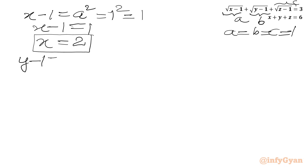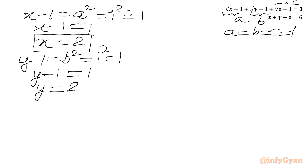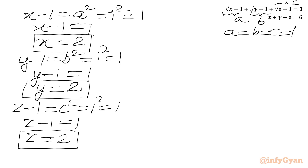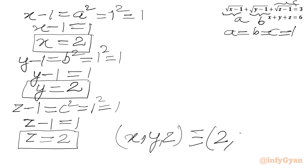Similarly, y minus 1 equals b squared. Since b equals 1, we write y minus 1 equals 1, so y equals 2. And z minus 1 equals c squared equals 1 squared equals 1, so z minus 1 equals 1, giving z equals 2. Our final answer is x, y, z equals 2, 2, 2.